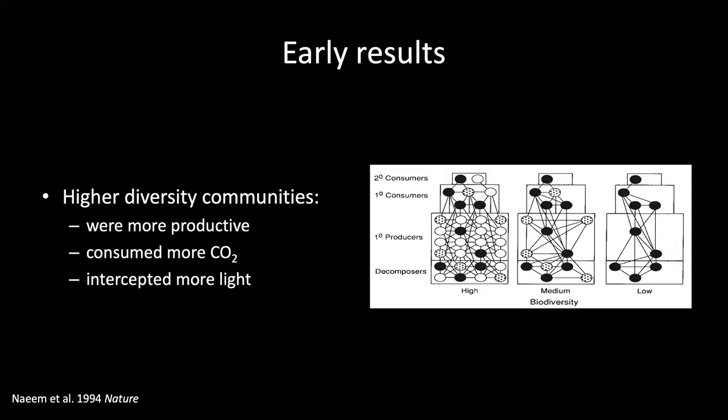Both studies were quickly criticized for having confounded species identity with species richness. The diversity gradient in the fertilization study was the result of fertilization — heavily fertilized communities had low plant diversity and different types of species than those in high-diversity communities. The food web experiment had considered nested subsets of a full food web, and thus it was unclear whether observed changes in ecosystem functioning were due to decreases in the number of species per se, or rather the loss of a particularly critical species. This posed a new challenge for biodiversity and ecosystem functioning research.